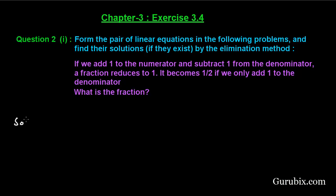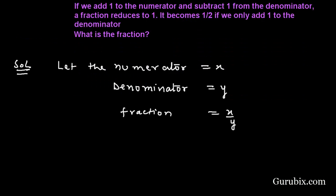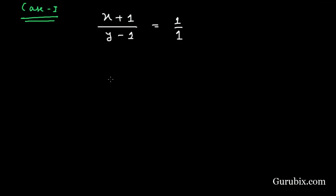We have to find the fraction. So let the numerator be x and the denominator equal to y, and the fraction equals x over y. There are two situations in the given problem. In situation one, we are told: if we add 1 to the numerator and subtract 1 from the denominator, then the fraction becomes 1.